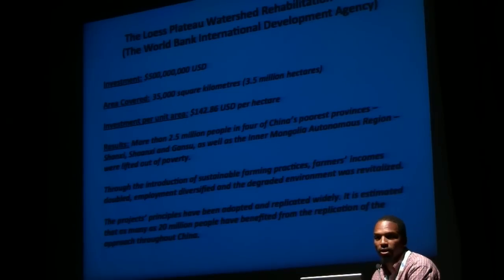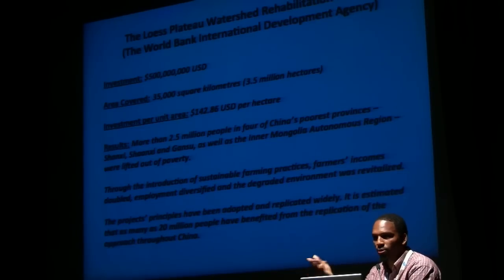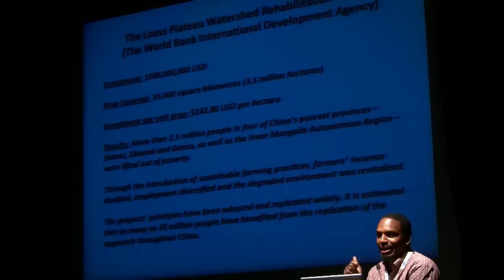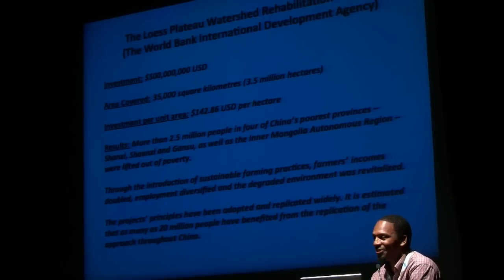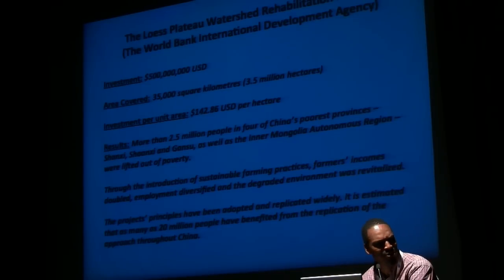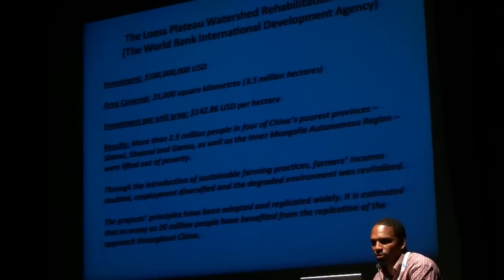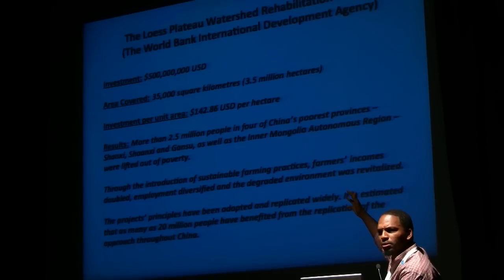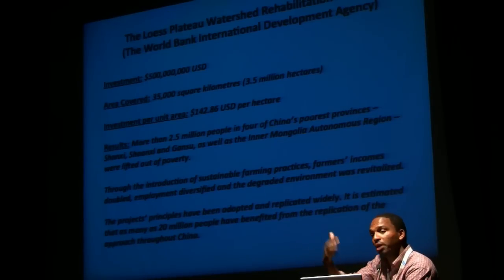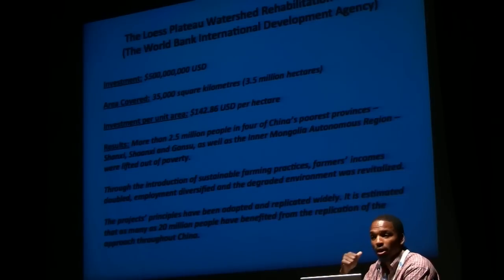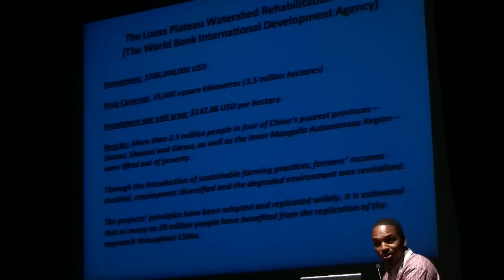Brett walked through the region, saw pomegranates growing very well, and proposed finding a market for them. He went back to the UK and started a business called Pomegrate. Because he was able to find a market for the product, he was able to get a better price for pomegranates than the Afghans were getting for opium. There's a picture of him burning a big pile of poppies. Now he's expanding the product line to include other crops — nuts, stone fruits, and value-added products that can be sold on the market.